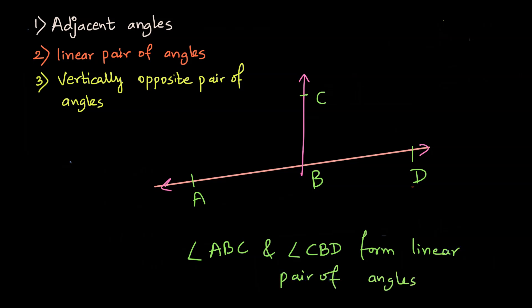And when we properly try to define this, how we can define this is the uncommon arms of these adjacent angles form a line. So the uncommon arms here are AB and BD, and A, B, D are collinear. So basically B is the point that lies between A and D, and all three points are collinear, and that's why AD is a line. So basically linear pair of angles are the adjacent angles where the non-common arms form a line.